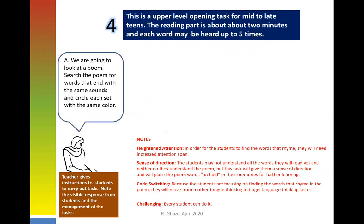Now we move to poetry, since that's what the group has been working on. The instructions are: search the poem for words that end with the same sounds, and circle each set with the same color. Notice I said 'end with the same sounds' rather than 'words that rhyme,' because when students just walked in speaking their native language, the word 'rhyme' may not conjure the concept as well. This same tool can be used for alliteration — words starting with the same sounds — or words with five syllables.